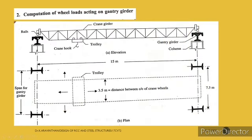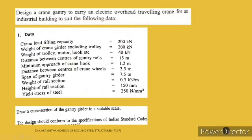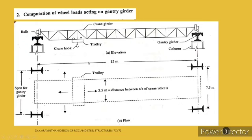Additional data: weight of rail section is 0.3 kN/m running above the girder; height of rail section is 150 mm (0.15 m); yield stress of steel fy = 250 N/mm². The objective is to draw the cross-section of the gantry girder to a suitable scale and design it per Indian Standard codes.